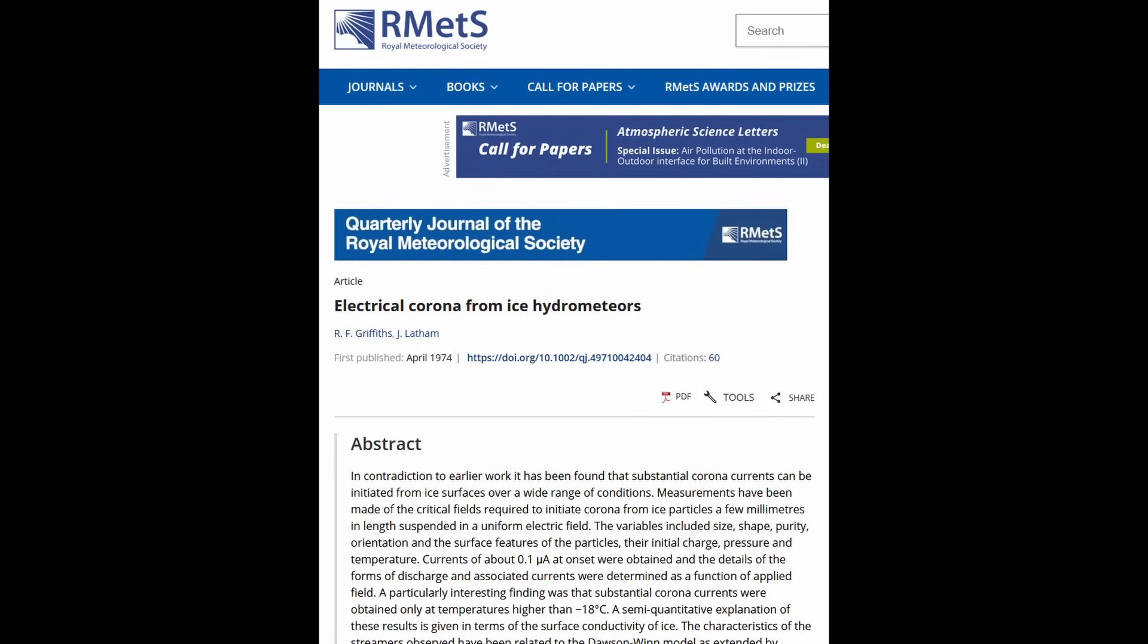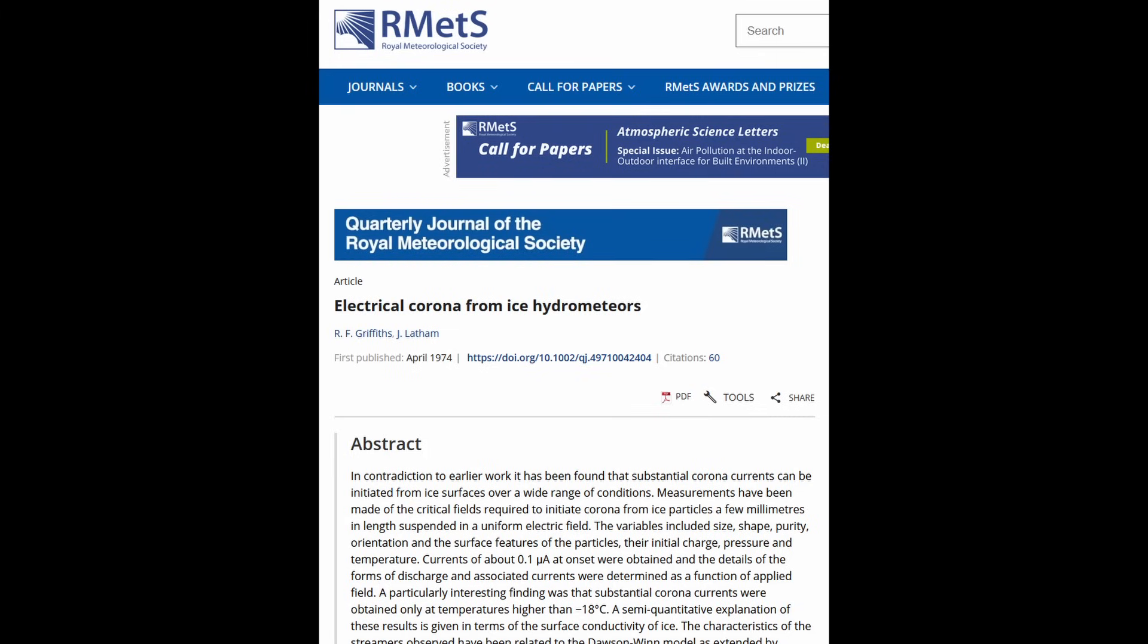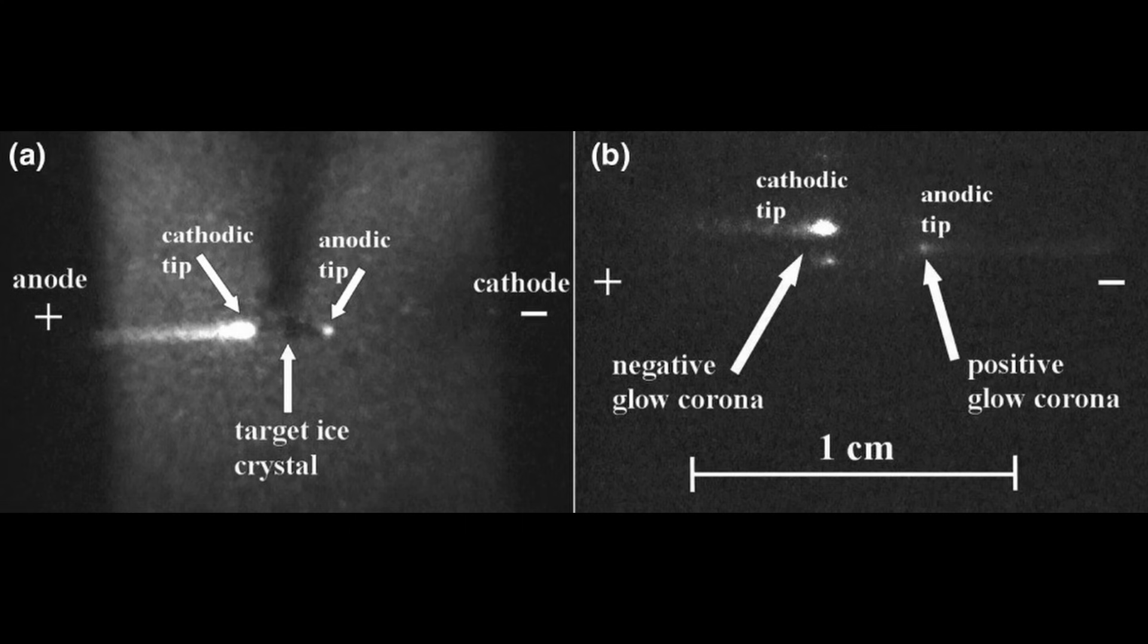Griffith and Latham conducted laboratory experiments using ice particles and discovered that the corona initiates with a positive discharge of regularly spaced onset streamer pulses. These streamers either terminate in the air gap or at the negative electrode.